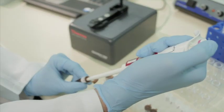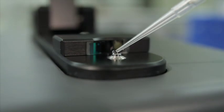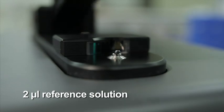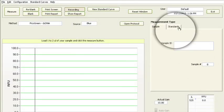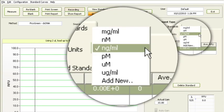Next, mix the reference solution by gentle pipetting. Using low retention tips, pipet 2 microliters of the reference solution onto the lower pedestal and close the lever arm. Select Reference under the Standards tab, and select the desired units.